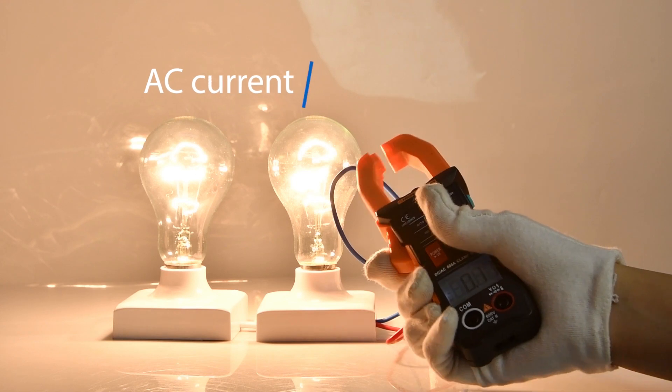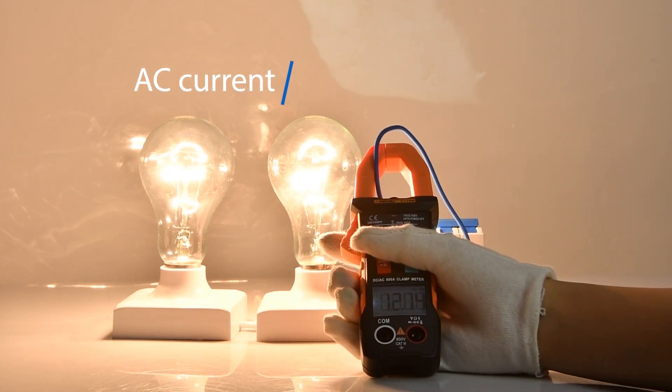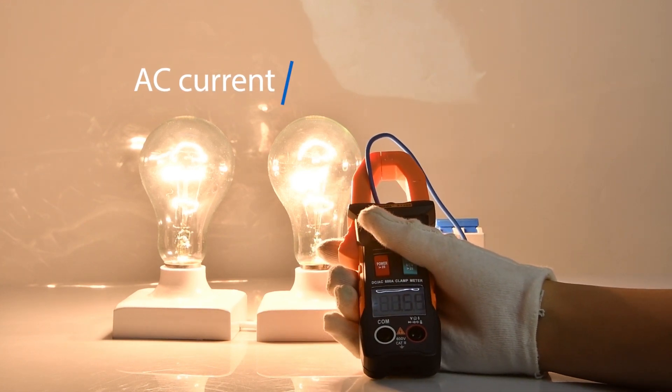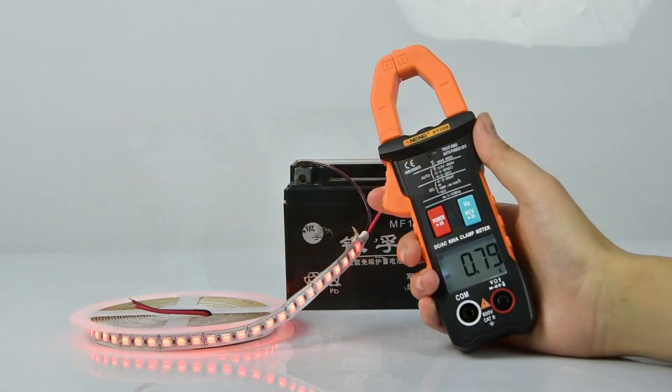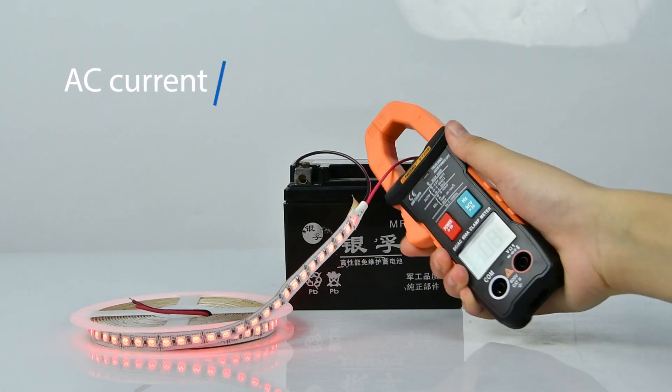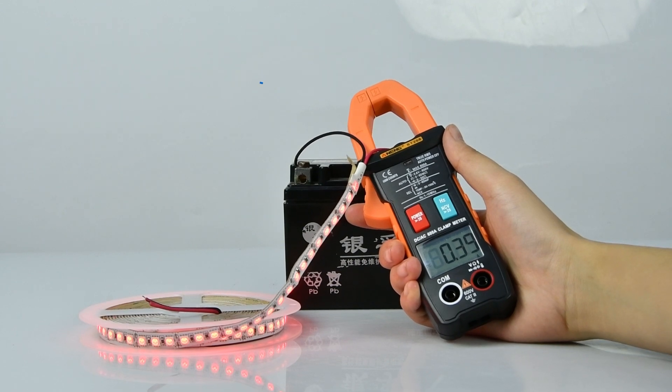AC current measurement is necessary in series when measuring. DC current measurement, the current must be connected in series.